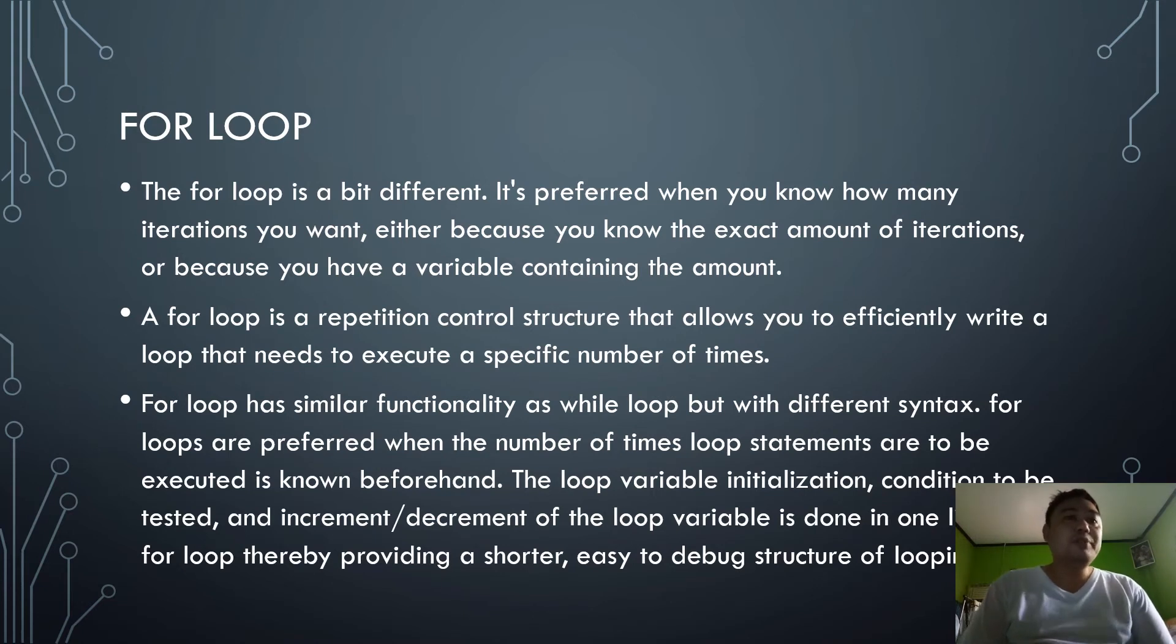For the for loop, the for loop is a bit different. It's preferred when you know how many iterations you want, either because you know the exact amount of iterations, or because you have a variable containing the amount. A for loop is a repetition control structure that allows you to efficiently write a loop that needs to execute a specific number of times. For loop has similar functionality as while loop, but with different syntax. For loops are preferred when the number of times loop statements are to be executed is known beforehand, and the loop variable initialization, conditions to be tested, and increment or decrement of the loop variable is done in the for loop, providing a short or easy way to debug the structure of the looping.